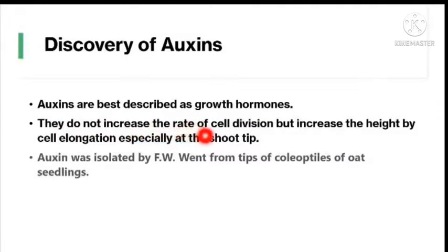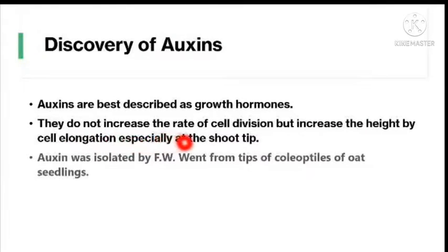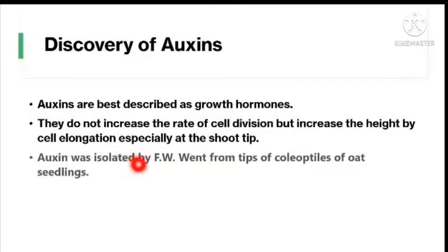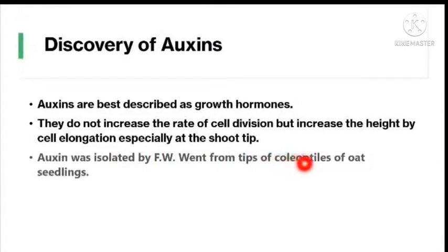First, the discovery of auxins. Auxins are best described as growth hormones. They do not increase the rate of cell division but increase the height by cell elongation, especially at the shoot tip. Auxin was isolated by F.W. Went from the tips of coleoptyles of oat seedlings.